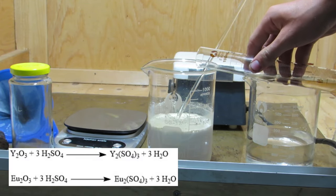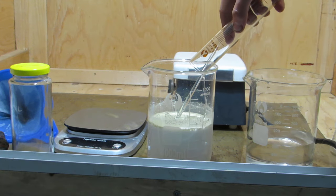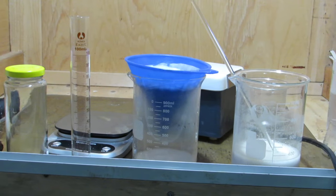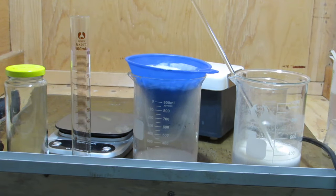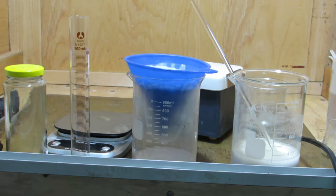The sulfuric acid will react with the yttrium and europium oxides to produce soluble yttrium and europium sulfate, but the lanthanum, cerium, and terbium phosphates will remain undissolved. After fully reacting with the acid, the solution was filtered to remove the insoluble phosphates. The filter was rinsed twice with distilled water.